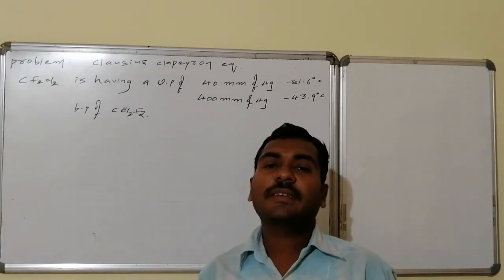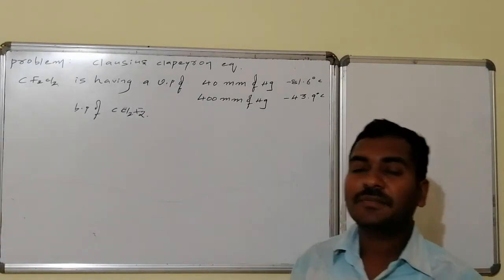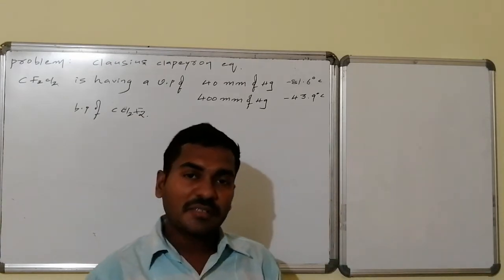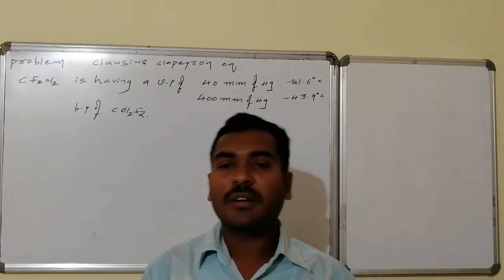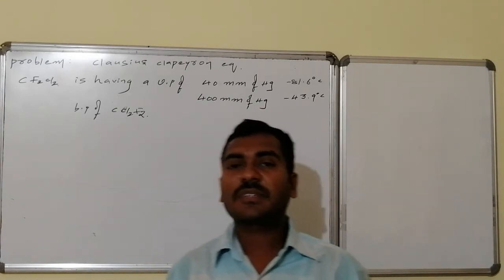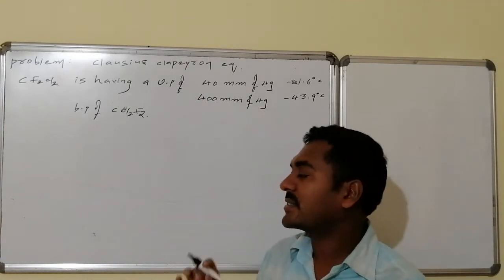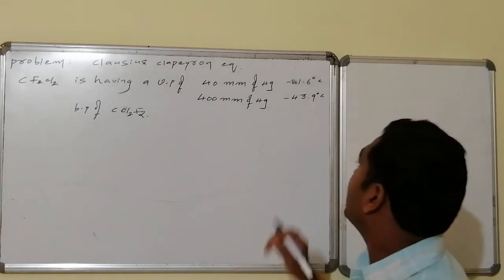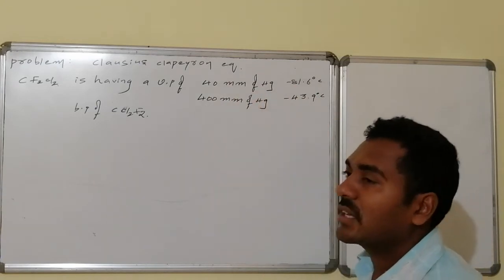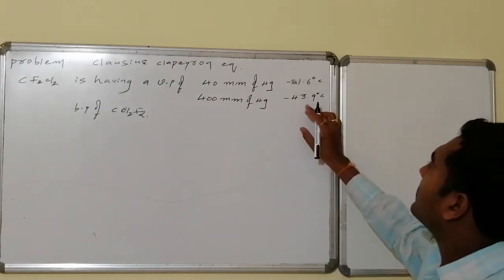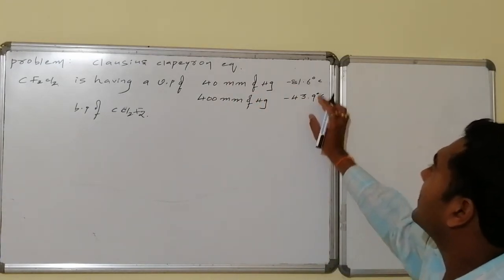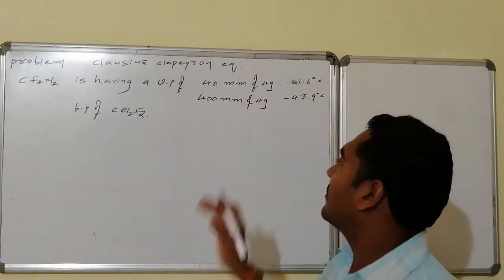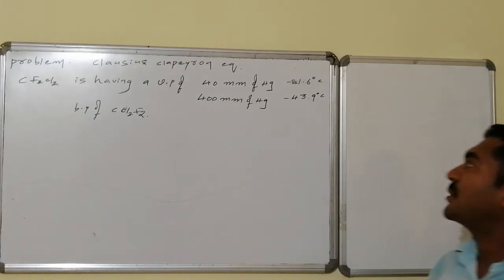Dichloro-Dichloromethane is a compound used as a refrigerant and it destroys the ozone layer present in the atmosphere. This liquid substance has a vapor pressure of 40 mmHg at minus 81.6 degrees centigrade. With increasing temperature, vapor pressure increases, and it becomes 400 mmHg at minus 43.9 degrees centigrade.